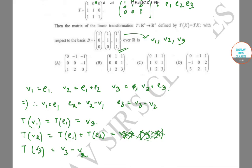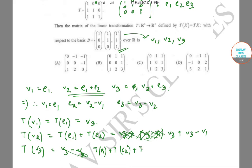Correcting the calculation: T(v2) = T(e1) + T(e2) since v2 = e1 + e2. T(e1) = (1,1,1) = v3, and T(e2) = (0,1,1) = (1,1,1) − (1,0,0) = v3 − v1. For T(v3): v3 = e1 + e2 + e3, so T(v3) = T(e1) + T(e2) + T(e3). T(e3) = (0,0,1) = v3 − v2.